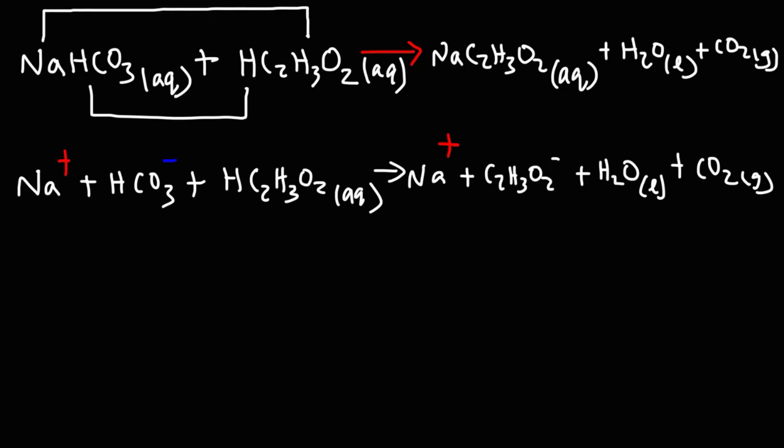Now, in order to write the net ionic equation, we need to eliminate the spectator ions. So these are the ions that don't participate in the chemical reaction. In fact, they appear exactly the same on both sides of the equation. And so in this example, the spectator ions are the sodium ions.